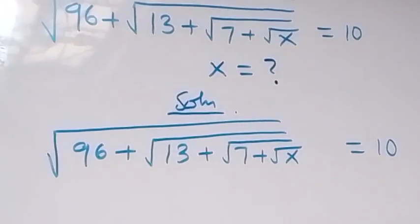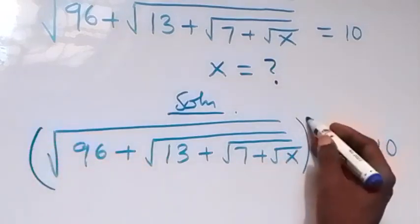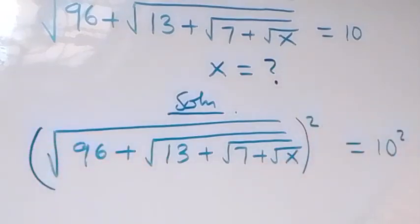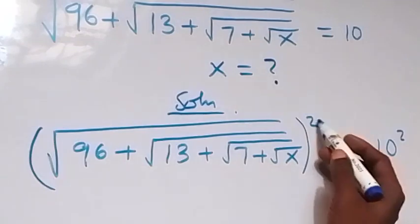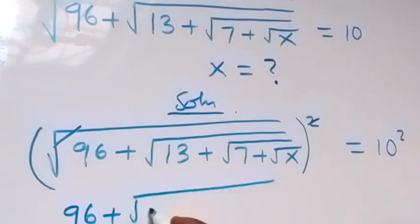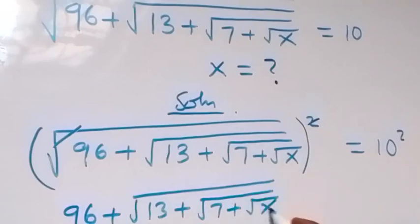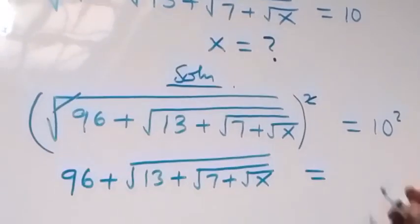Now here, let's square both sides. Squaring this side and also we square this side. The square cancels the square root and what we are left with here is 96 plus square root of 18, then plus square root of 7 plus square root of x, which now equals 10 squared.